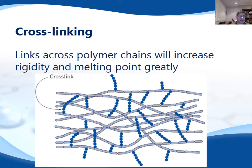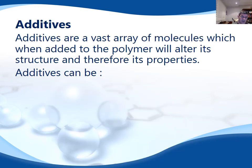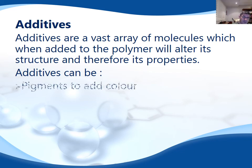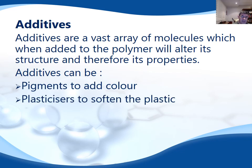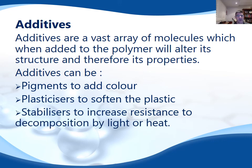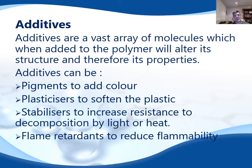Another thing we can have is crosslinks. Crosslinks are basically smaller molecules which hold some of the polymer chains together, increasing the rigidity of the material. We can also have additives, which can be for aesthetic reasons to improve the appearance of the polymer, or functional. These include things like pigments, plasticizers which soften the plastic, stabilizers to resist heat and light decomposition, and also certain substances which reduce flammability.